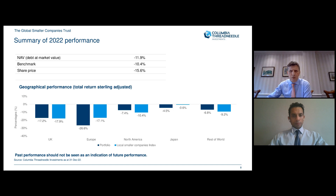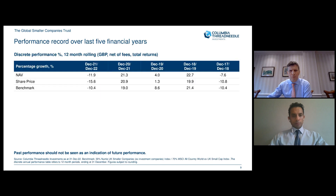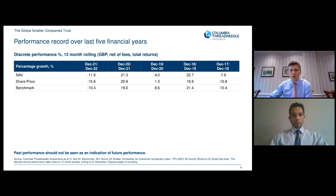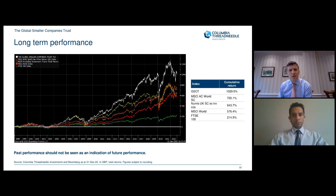Japanese market returns were relatively resilient last year, and Asian stocks held up a bit better being further from the war. Looking at the five-year discrete performance data, three of the last five years the NAV has actually beaten the benchmark, so last year was a little bit behind but the longer-term record is better.